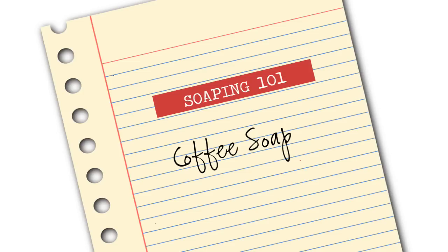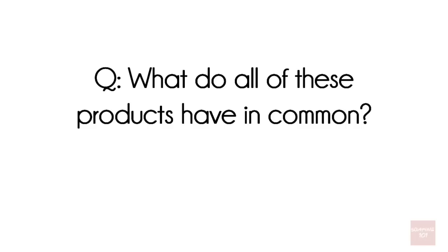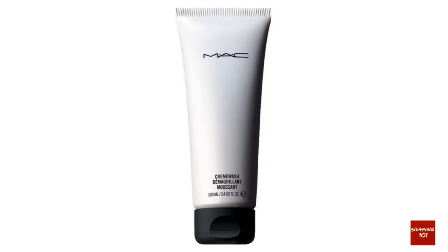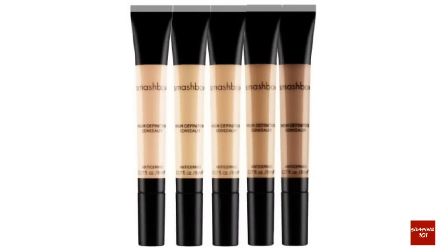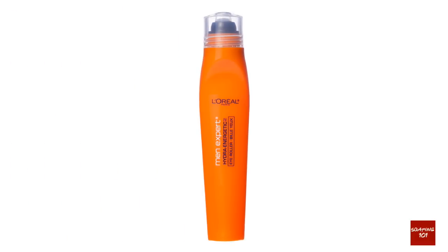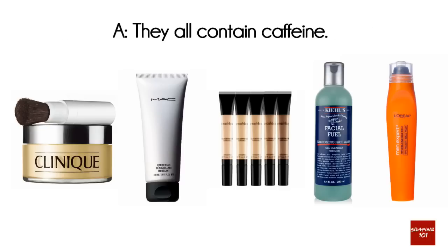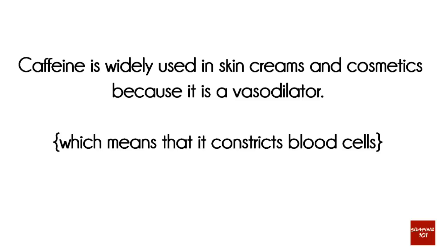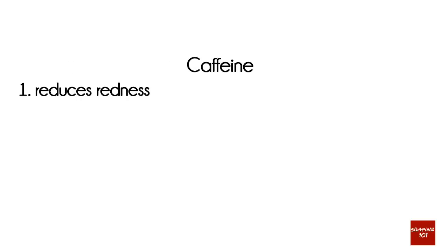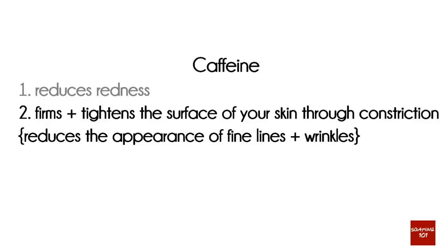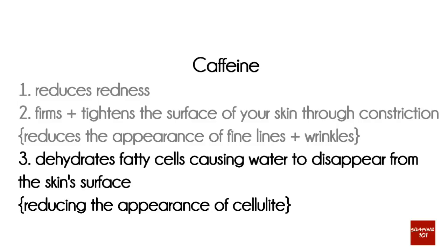Let's begin with a question that some of you may or may not know the answer to. What do all of these products have in common? They all contain caffeine. Caffeine is widely used in skin creams and cosmetics because it is a vasodilator, which simply means that it constricts blood cells. Caffeine also reduces redness, firms and tightens the surface of your skin through constriction, thus reducing the appearance of fine lines and wrinkles, and it also dehydrates fatty cells causing water to dissipate from the skin surface, thus reducing the appearance of cellulite.